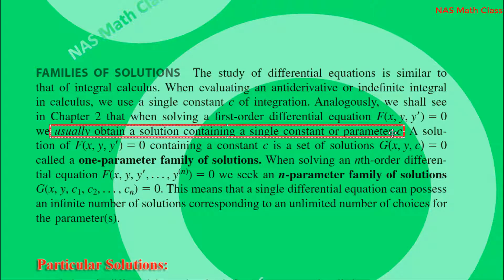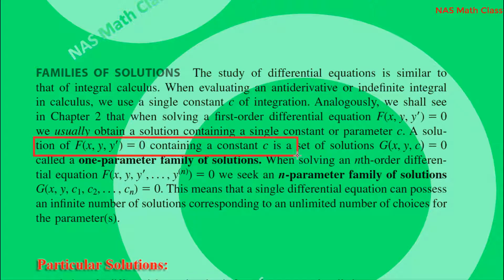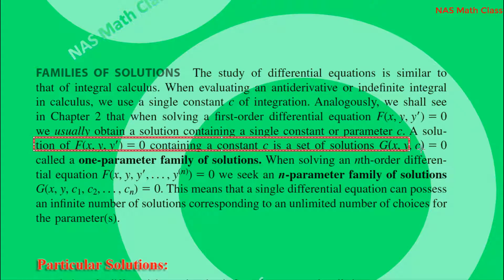For a first-order differential equation, the solution normally contains a single constant parameter c. A solution of the first-order differential equation containing a constant c is a set of solutions g(x, y, c) = 0. This is called a one-parameter family of solutions.